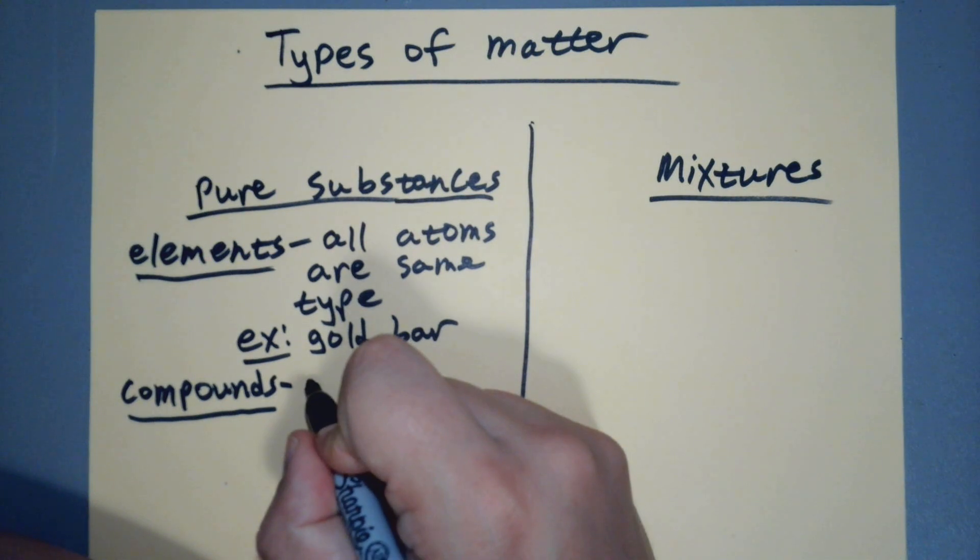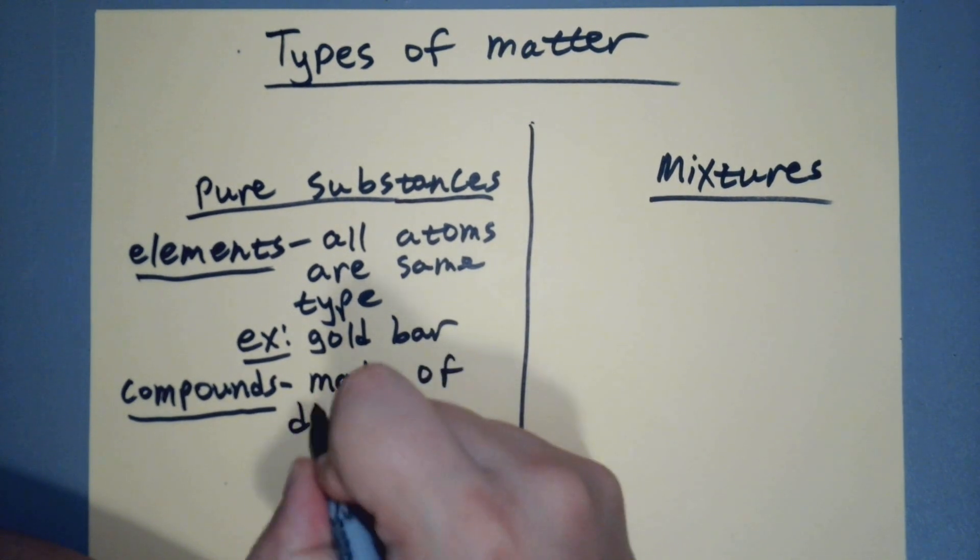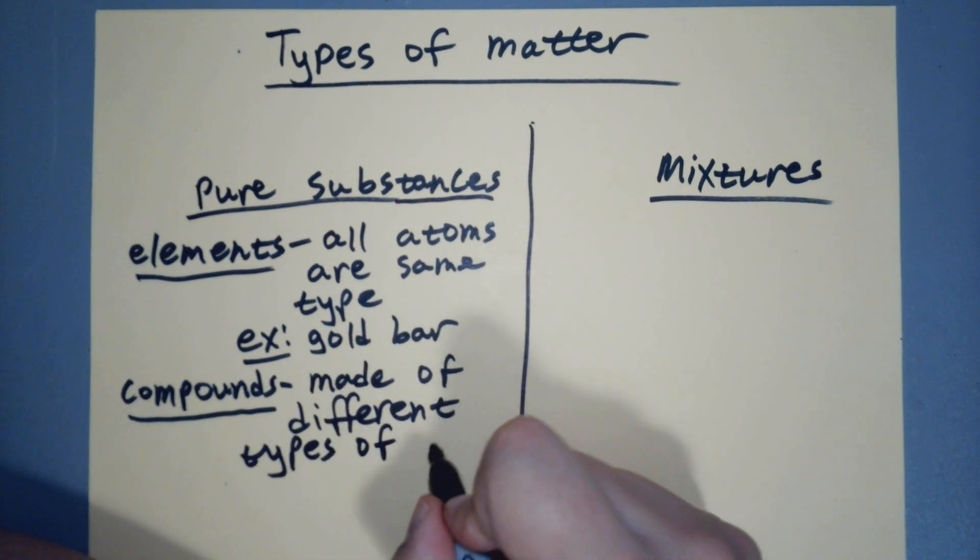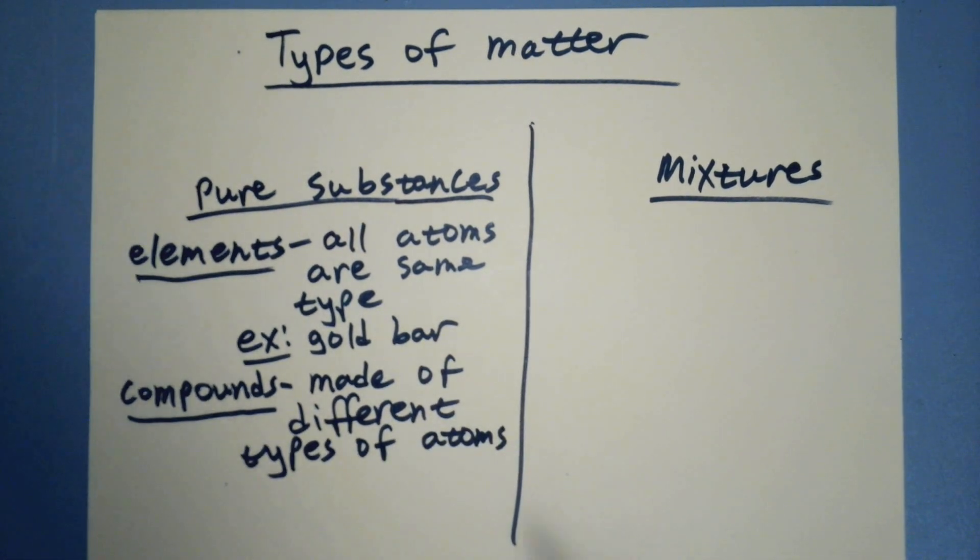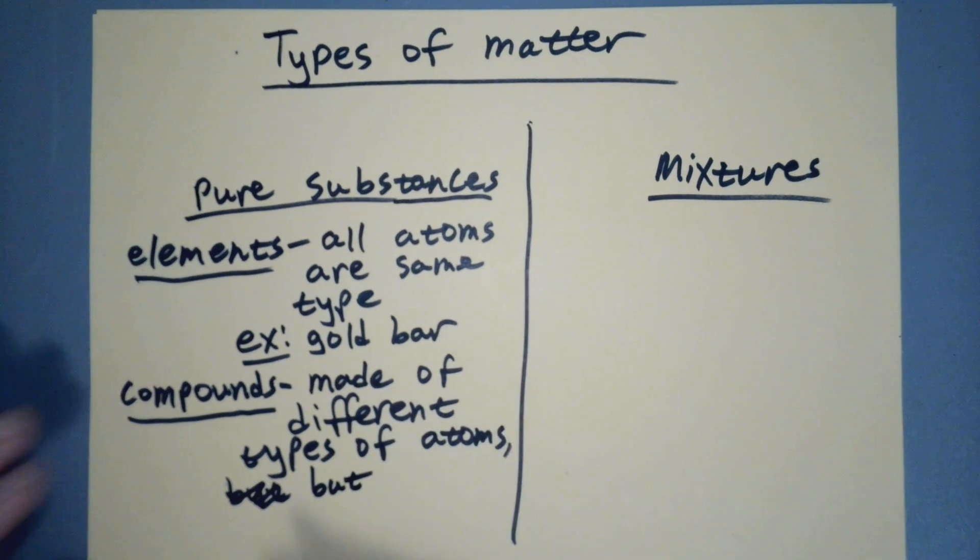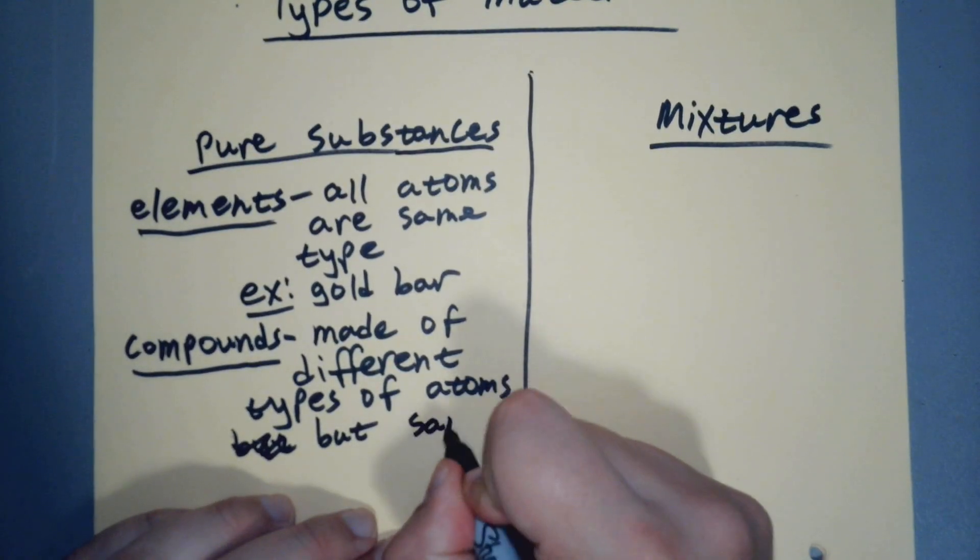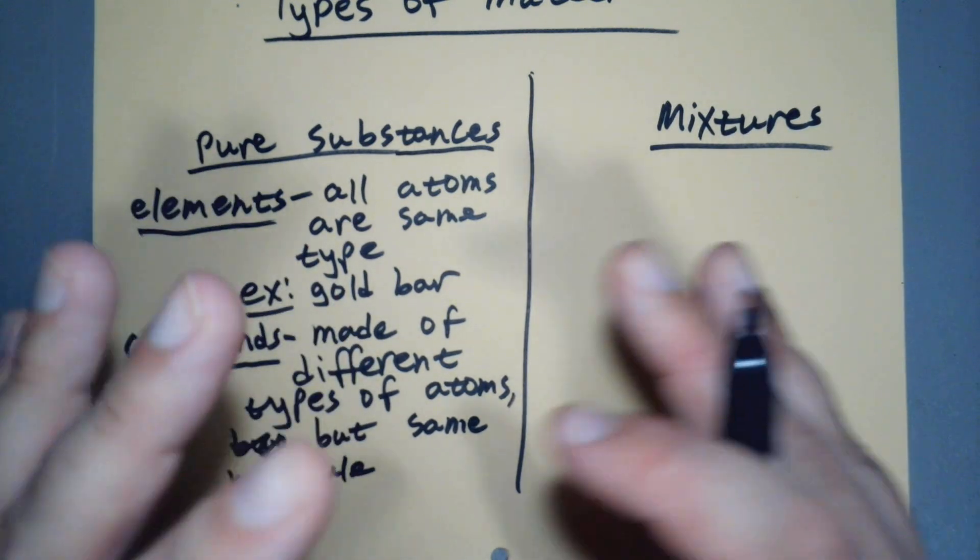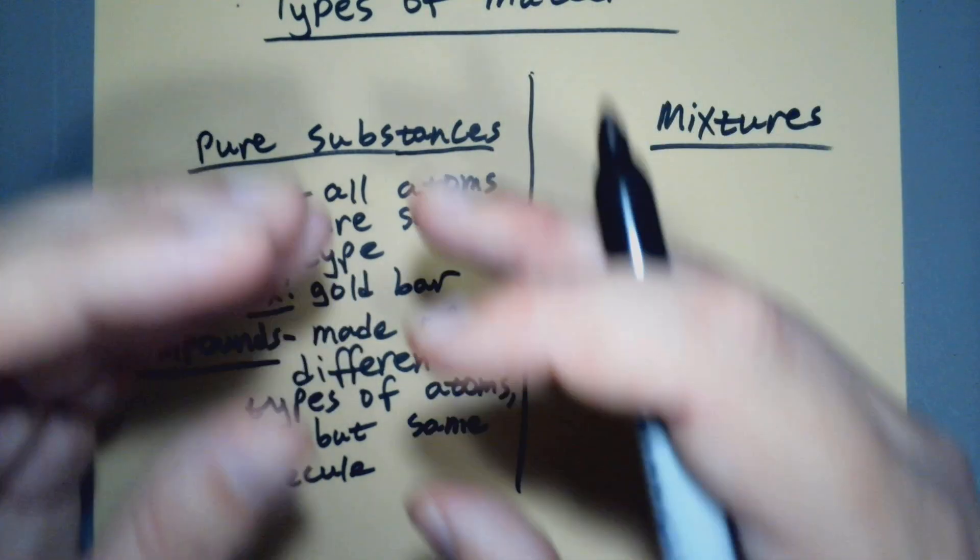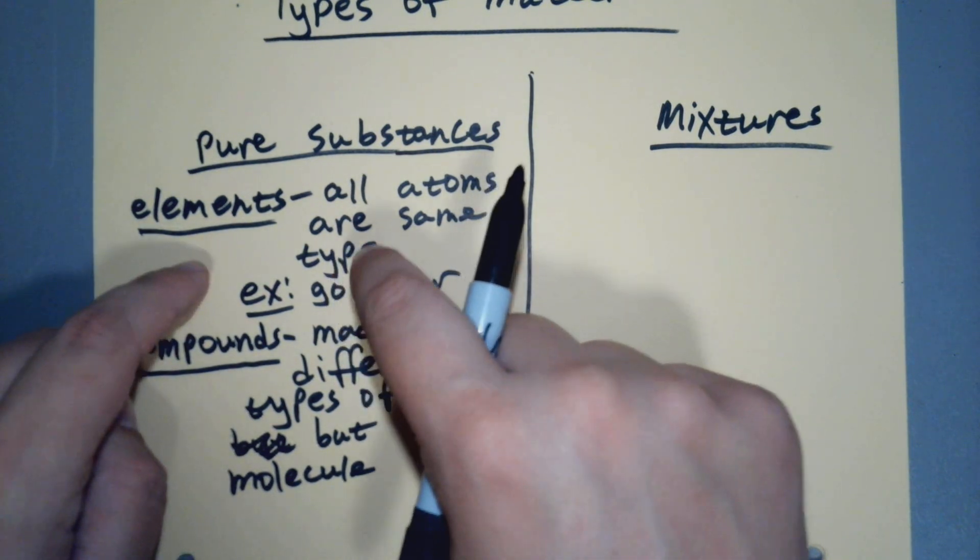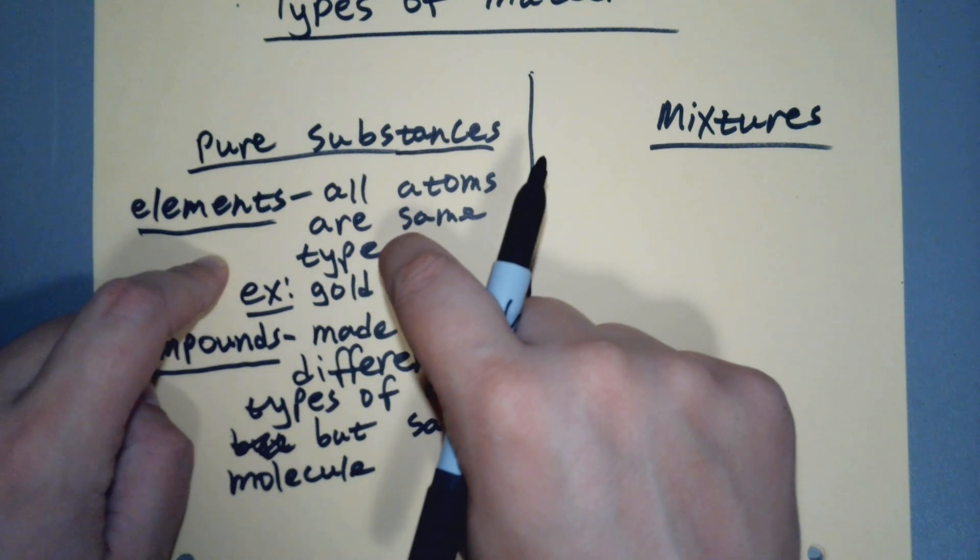Compounds are made of multiple types of atoms or different elements, but they're put together in the same way. They're the same molecule. Atoms are like Legos and it's like the same Lego set over and over again - it's the same car. There's not a different car in there, so it's a pure substance because it's all the same set, whereas elements would be like they're all the exact same Lego piece.